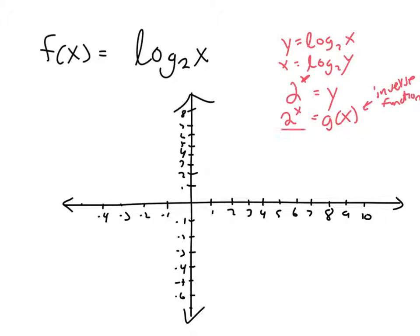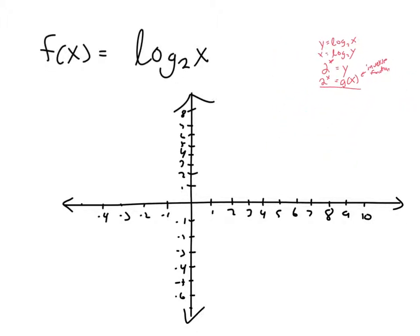We can graph g(x) = 2^x easily because we've already talked about this in previous videos. When you plug in 0 for x, you get 1, so it always goes through the y-axis at 1. If you plug in 1, it's 2. If you plug in 2 for x, it's 4. And at 3, it's 8. So that's the graph of g of x.